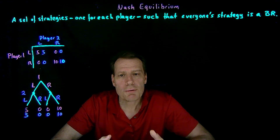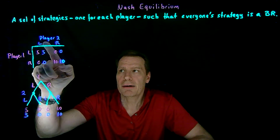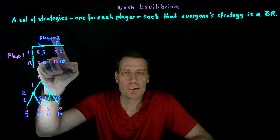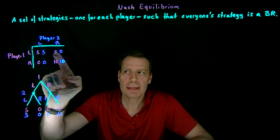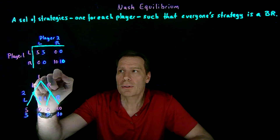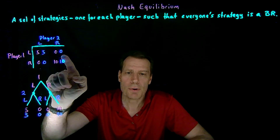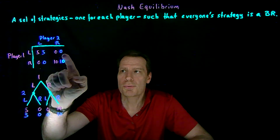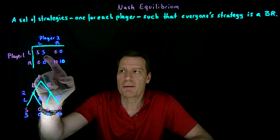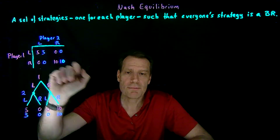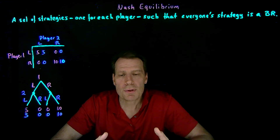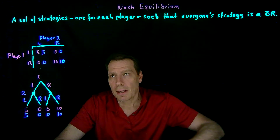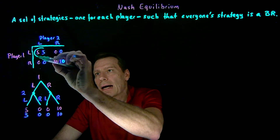Now we have to check if the reverse is true — is player two playing left also a best response to player one playing left? If player one chooses left, player two knows she's going to end up in this row, with a choice between five and zero. Five is better, so left is in fact the best response to player one going left. We've now found a set of strategies where both players are best responding to each other — a Nash equilibrium outcome.